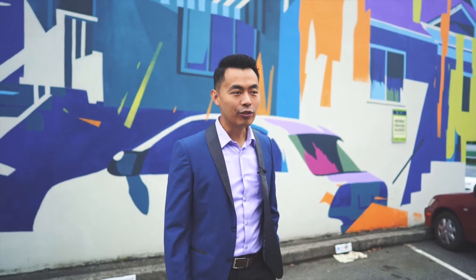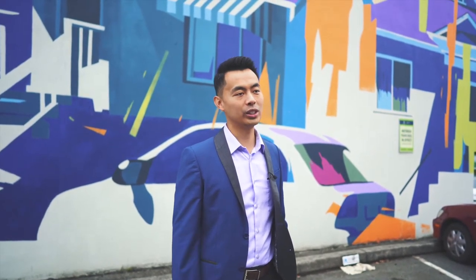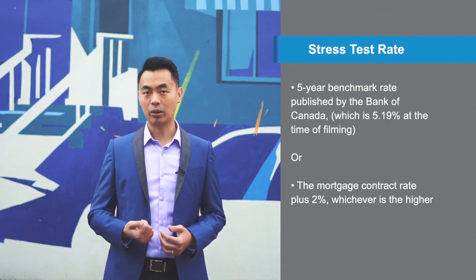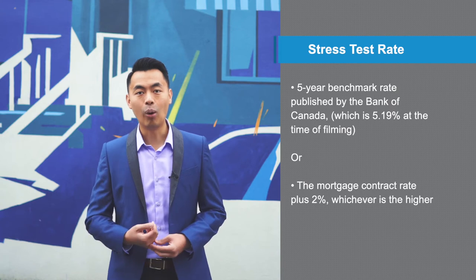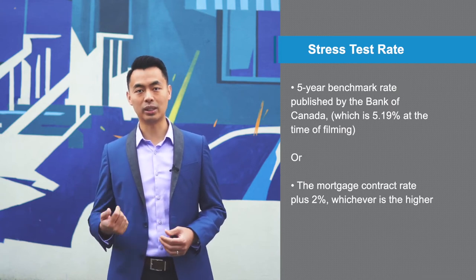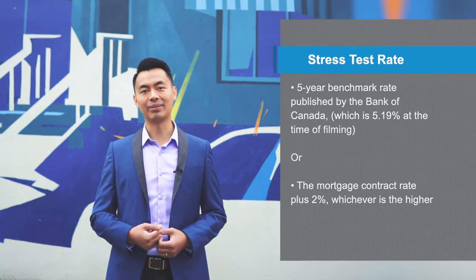So what is the stress test? The stress test is the inflated rate banks use to qualify your mortgage application. Since the higher the rate means your potential payment is higher, this leads to a lower mortgage amount you can qualify for. The rate used is either the five-year benchmark rate published by the Bank of Canada, which is currently 3.19%, or the mortgage contract rate plus 2%, whichever is higher. This doesn't mean your rate is going to be higher — the bank is just using a higher rate to qualify you. You still get the current market interest rate.